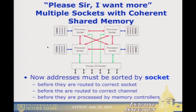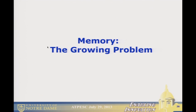Multi-socket nodes use specialized interfaces between sockets — QPI used by Intel, HyperTransport used by others — which allow a memory reference to cross sockets. When you do this, you must first sort addresses by socket, then by channel, and so on. So here are the cases where I want you to walk away viewing with alarm that the world may be falling in on you.